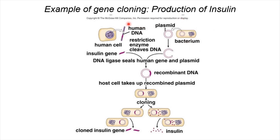First, human DNA is isolated from human cells. Both the human DNA and the plasmid are cut using the same restriction enzyme. The insulin gene is then isolated from the human DNA and inserted into the plasmid. DNA ligase seals the human gene and plasmid together to form recombinant DNA.